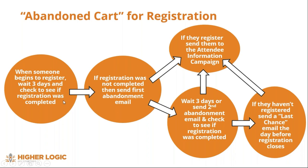Walking through the workflow: someone clicks the registration link and three days later still hasn't completed it — they get the first abandonment email. A couple days after that, the system checks again and sends another. Then, keeping the campaign timeline in mind, they'll get a last-chance abandonment email right before registration actually closes. At any point they register, they stop receiving abandonment emails and go right into the attendee information campaign.